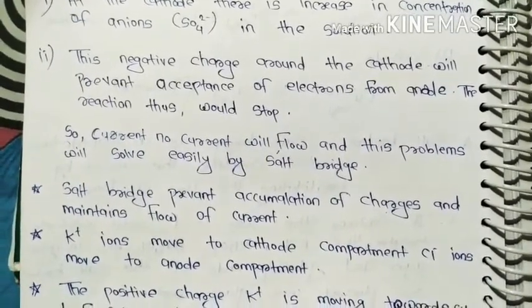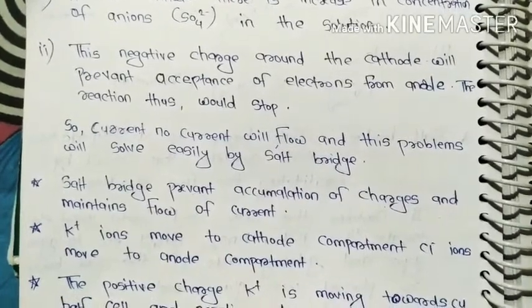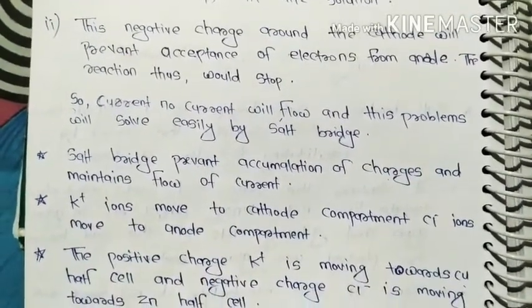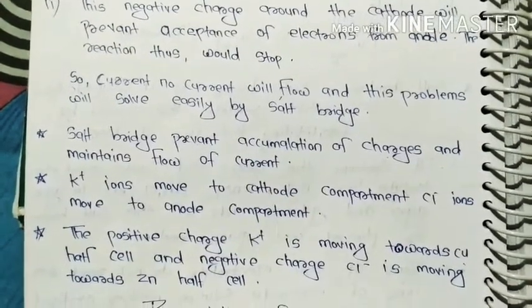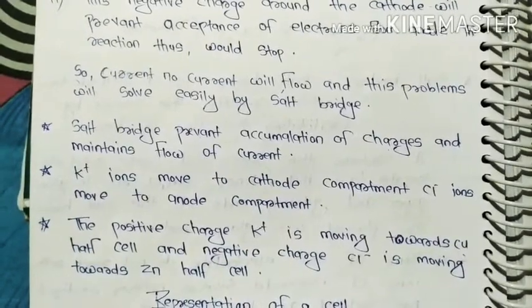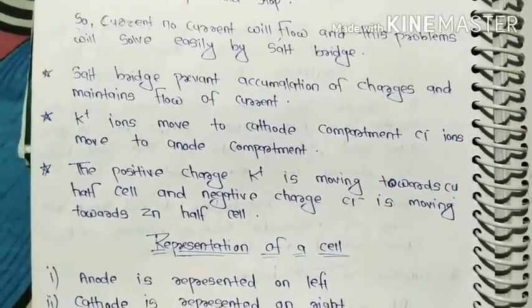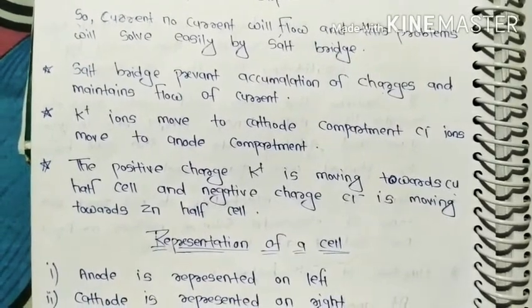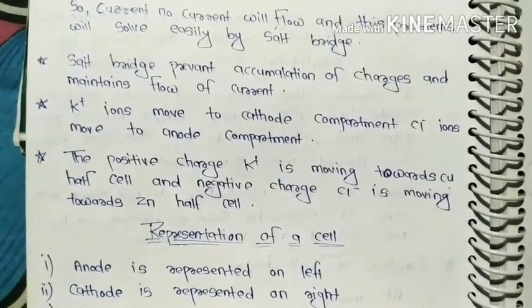So no current will flow and these problems will be solved easily by salt bridge. Salt bridge prevents accumulation of charges and maintains flow of current. K⁺ ions move to cathode compartment. Cl⁻ ions move to anode compartment. The positive charge K⁺ is moving towards copper half cell, and negative charge Cl⁻ is moving towards zinc half cell.